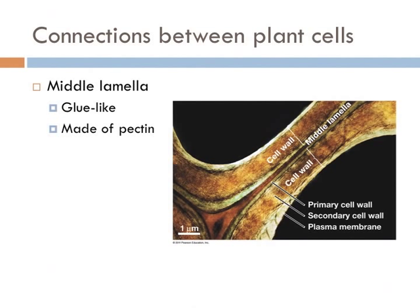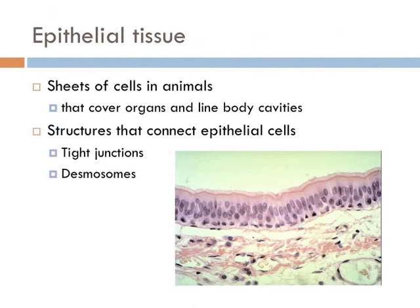The extracellular space between adjacent plant cells comprises three layers: the primary cell wall, the secondary cell wall, and the middle lamella. Plant cells are glued together by the middle lamella, which is continuous with the adjacent plant cells' primary cell walls. The middle lamella is comprised of gelatinous pectins. Pectin is what we use to make jellies with, so in essence, jelly binds the cell walls of plants in order to hold them together.